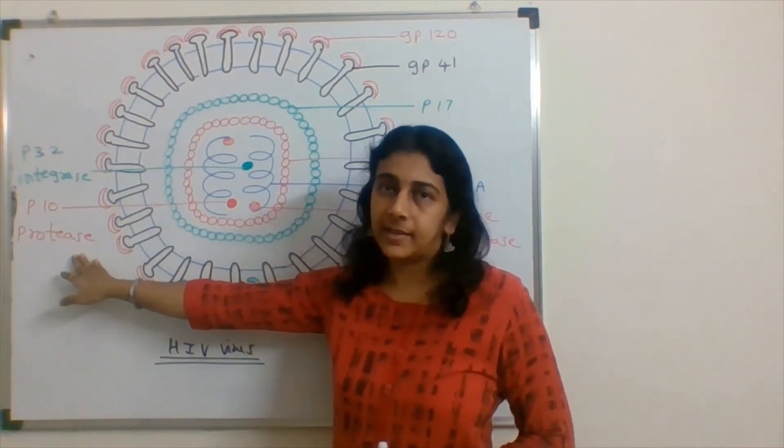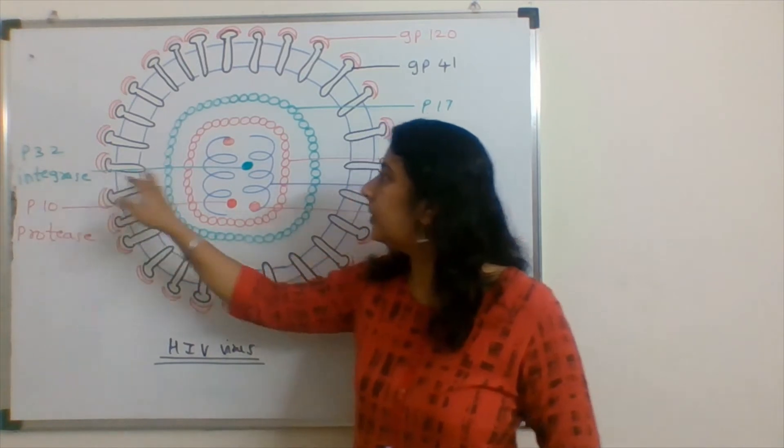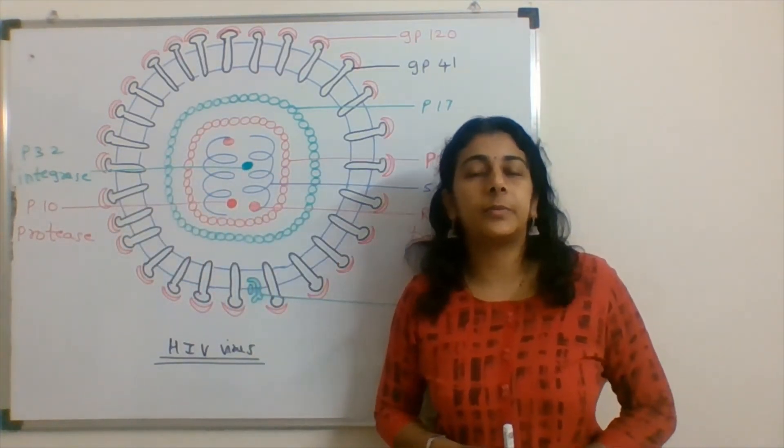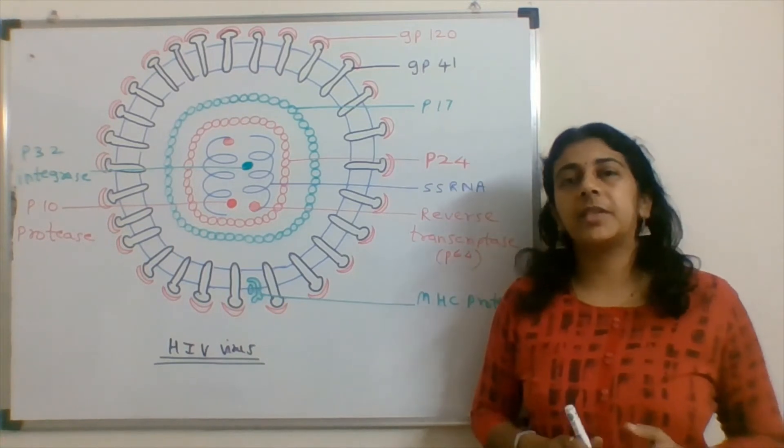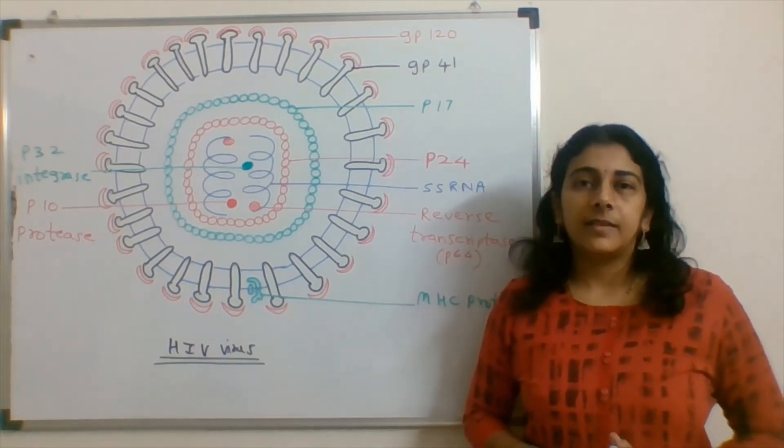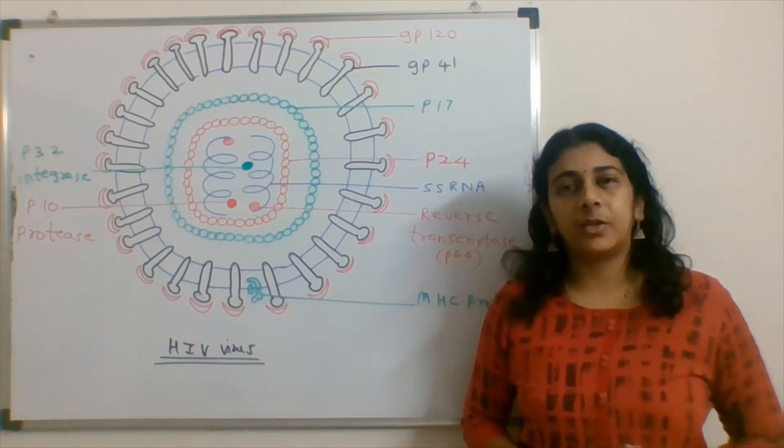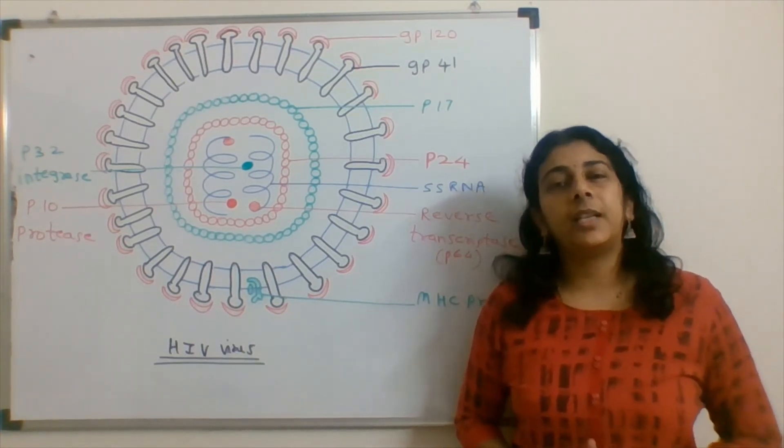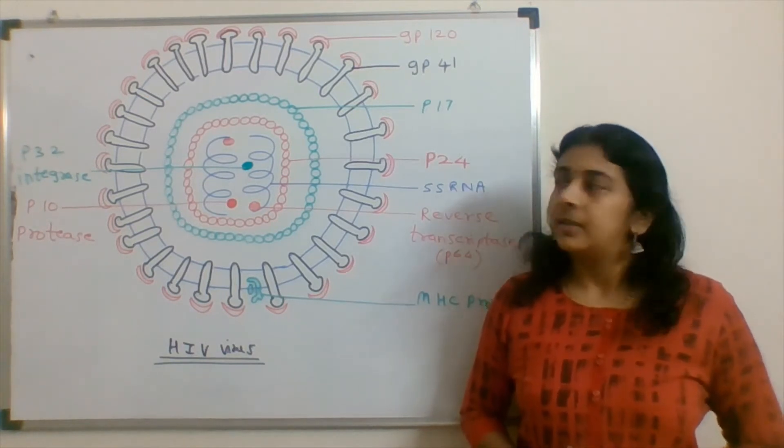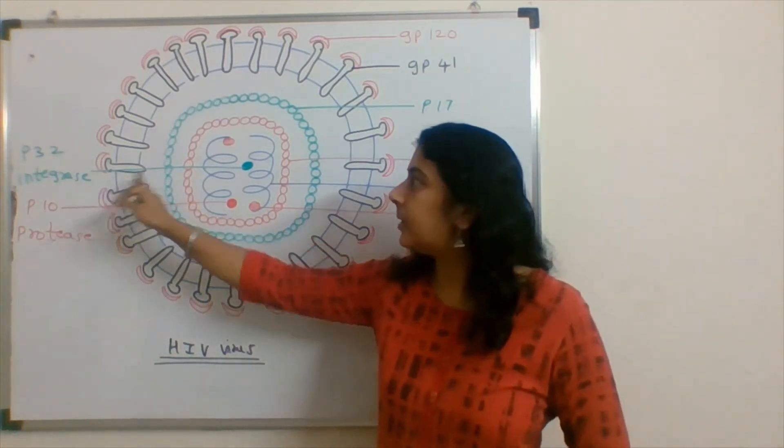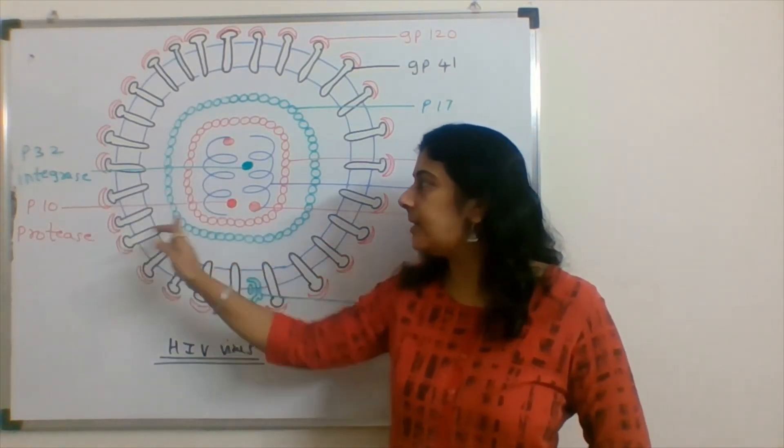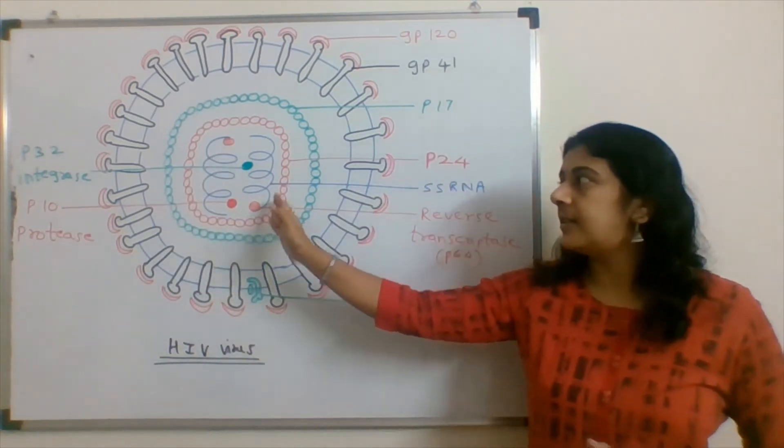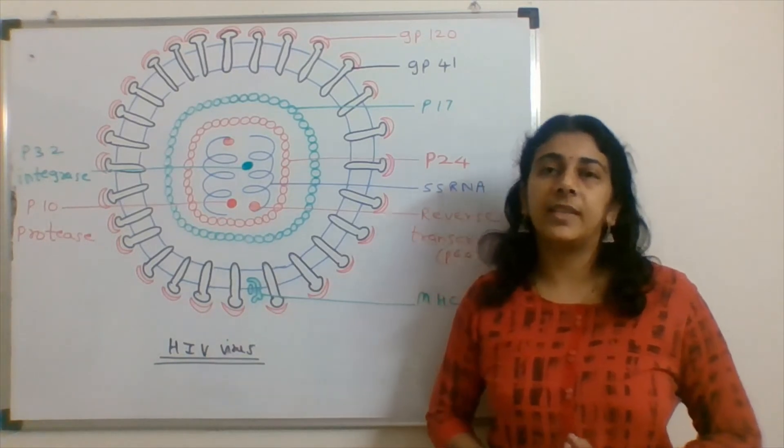P10 proteins and p32 integrase. Integrase integrates the reverse transcribed DNA genome. p32 integrase proteins and reverse transcriptase is there with each copy of single stranded RNA.